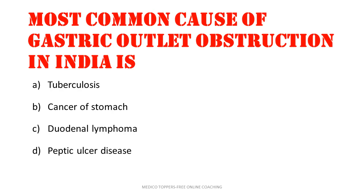Most common cause of gastric outlet obstruction in India: tuberculosis, cancer of stomach, duodenal lymphoma, peptic ulcer disease. You might have guessed the answer. It is cancer of stomach which is leading to the obstruction.